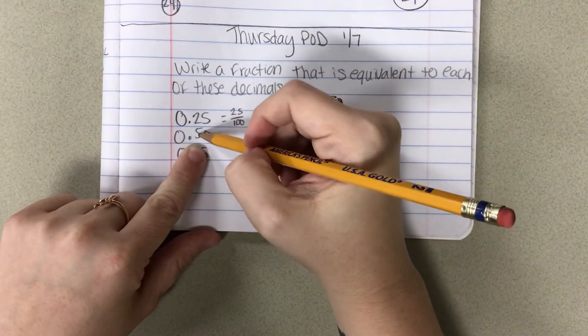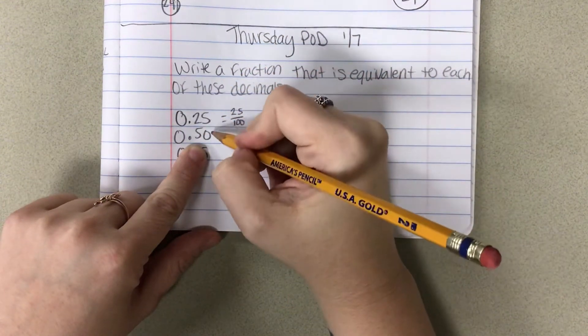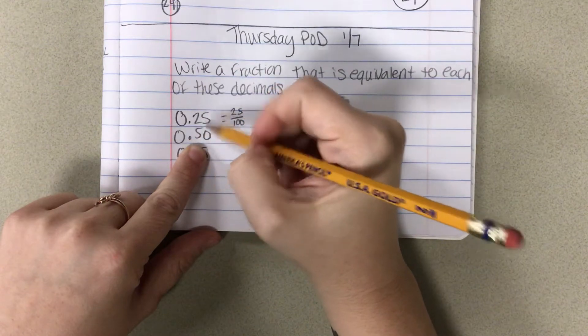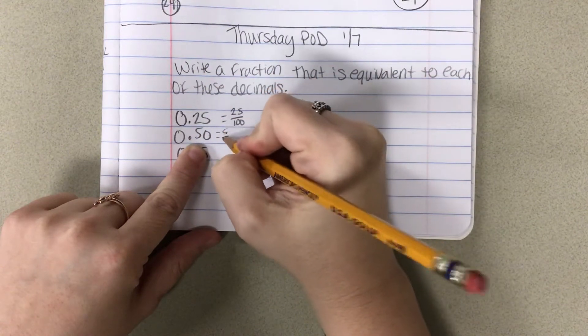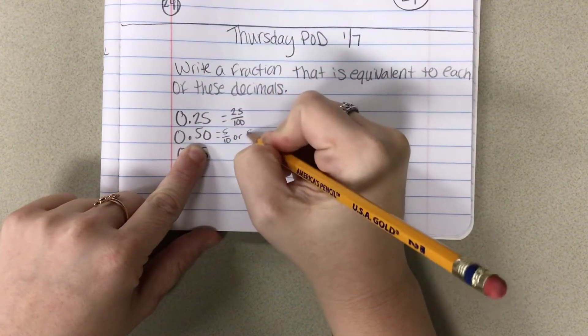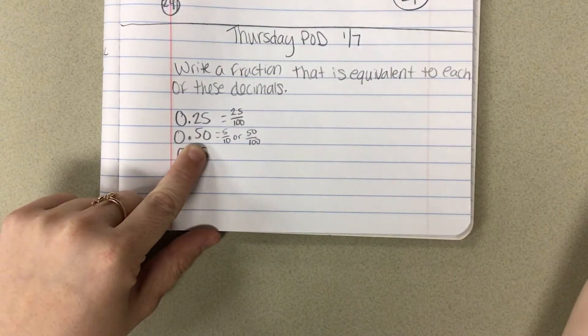0 and 5 tenths, or you could say 0 and 50 hundredths. So that could be 5 tenths or 50 hundredths. Either one of those would be correct.